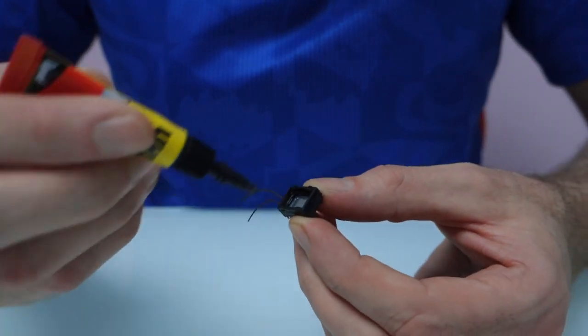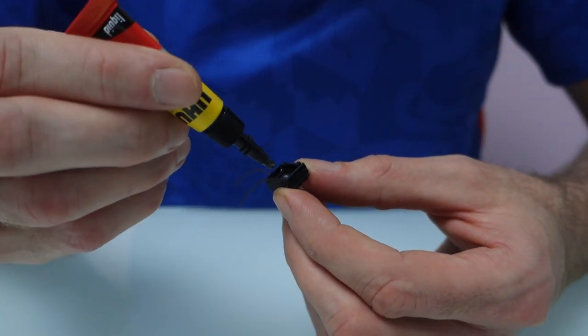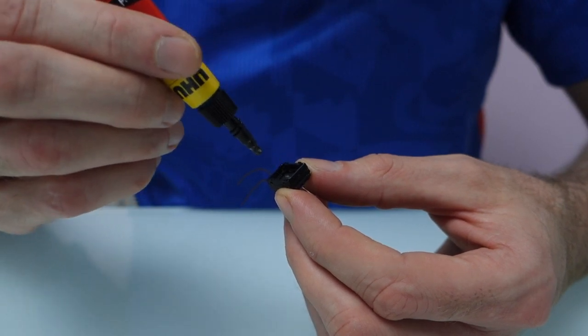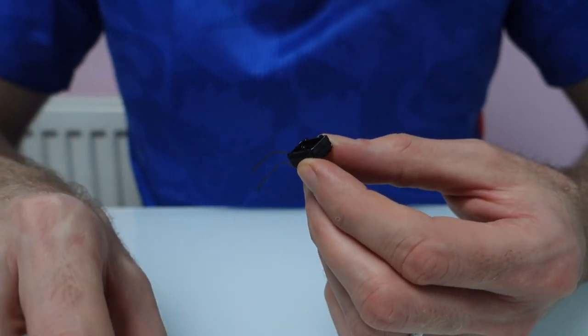And then put the first piece on, and they have little sort of tabs on them to locate them, so you can't really get it wrong.